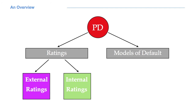Within the ratings class, we can make a distinction between external and internal ratings. Let's assume we are all part of a big international bank. External ratings are credit ratings that we obtain from third parties, typically rating agencies such as Moody's, Fitch and Standard & Poor's. We pay a fee and we obtain all the information we need. External ratings are only available for certain clients, usually large corporate clients.